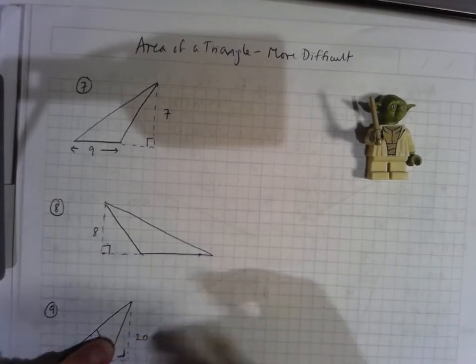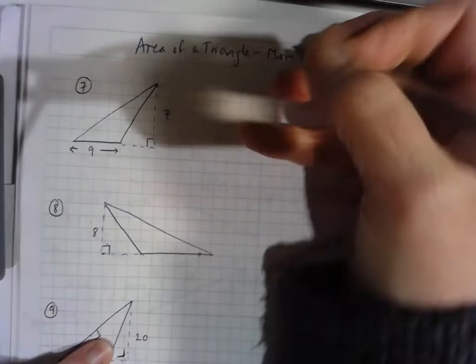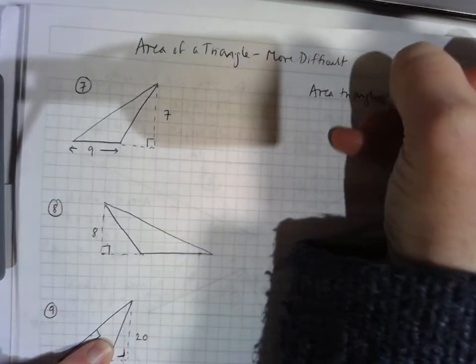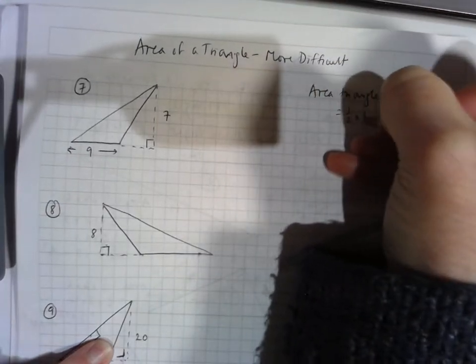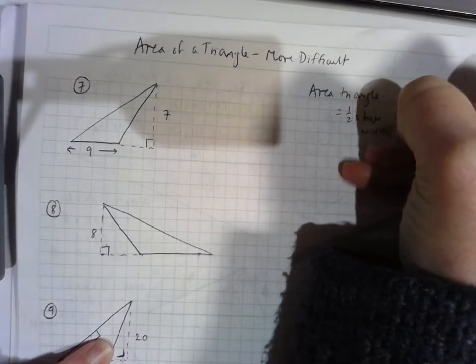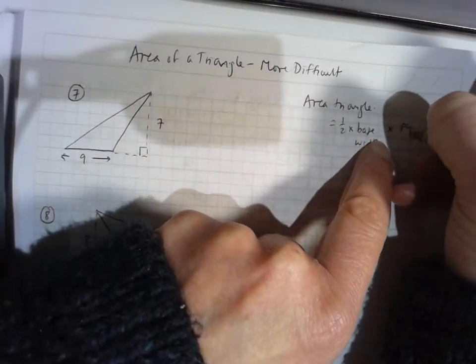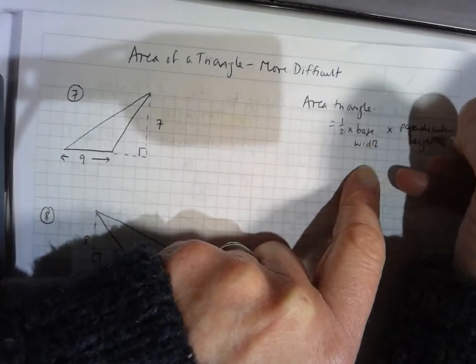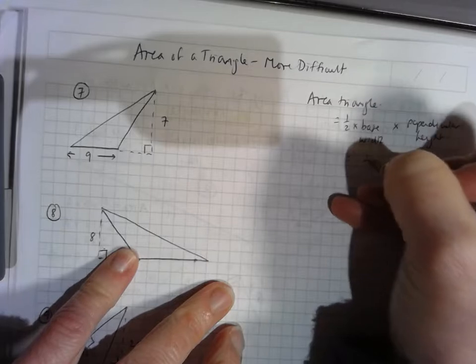I'm looking here at the area of a triangle, and these are more difficult examples. If you remember from our previous video, the area of a triangle, the formula for that is half times the base width times the perpendicular height. So basically that formula is a half times the base times the height.